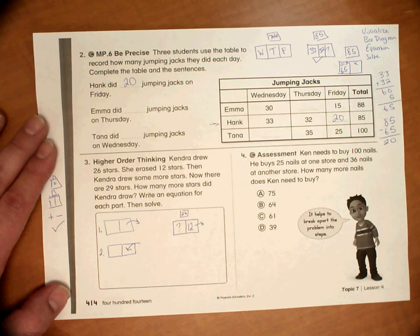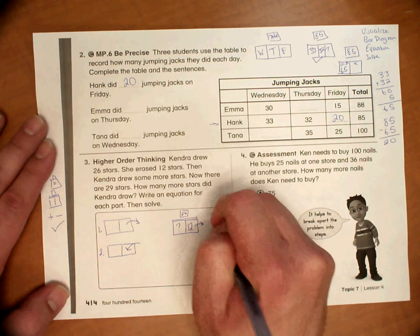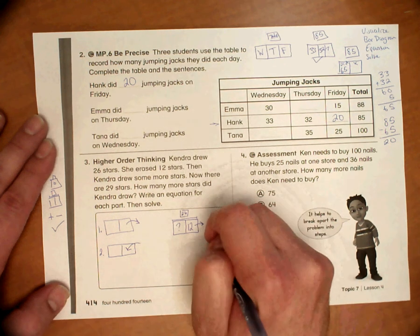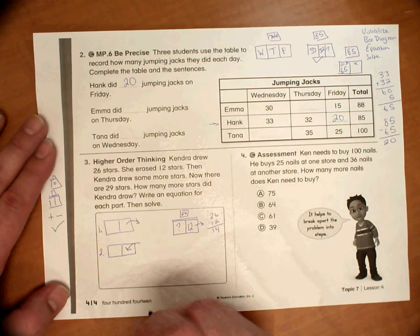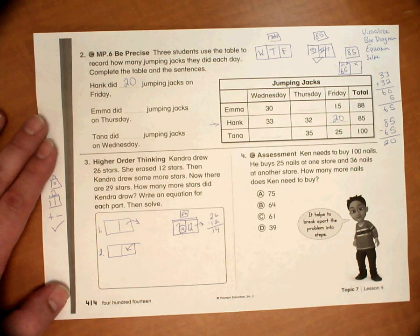The equation, looking at the bar diagram here, the equation is going to be 26 minus 12. 26 minus 12 is 14. So we know that she has 14 stars remaining.